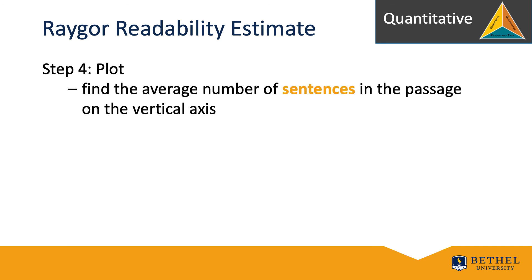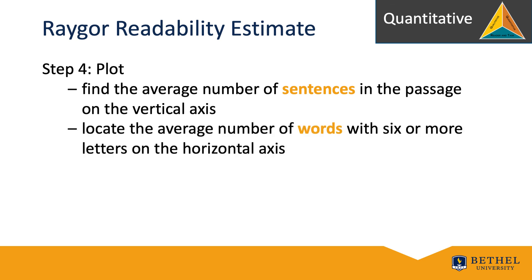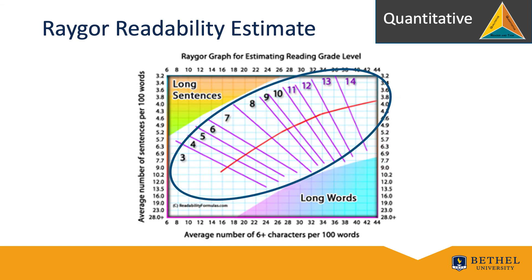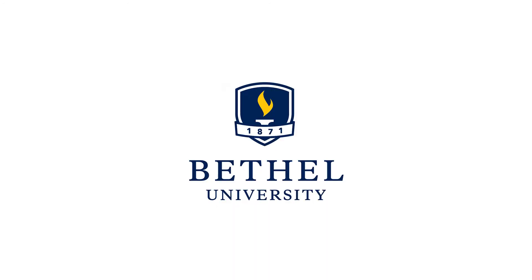Now let's plot our totals. First, find the average number of sentences in the passage on the vertical axis. Locate the average number of words with 6 or more letters on the horizontal axis. Plot the intersection of sentences and words on the graph to arrive at a grade-level designation. Note: the grade level is only valid within the parallel lines. If your point is plotted in the top left area of the grid or the bottom right — outside the parallel lines — your total is invalid for the purposes of this estimate.